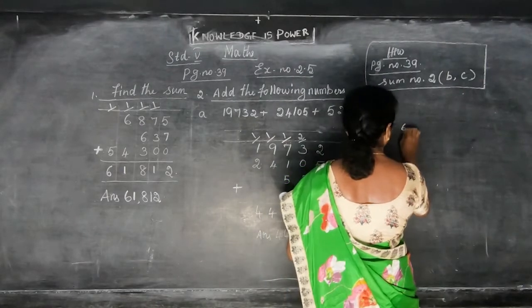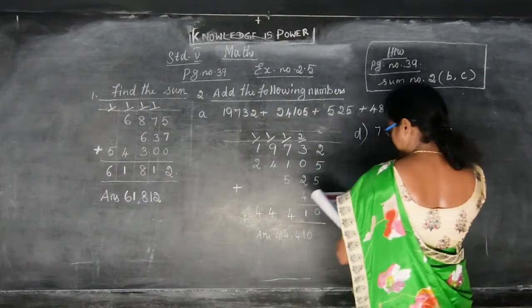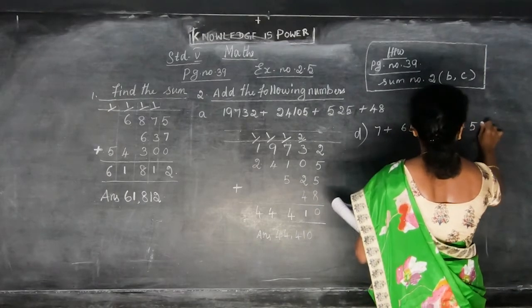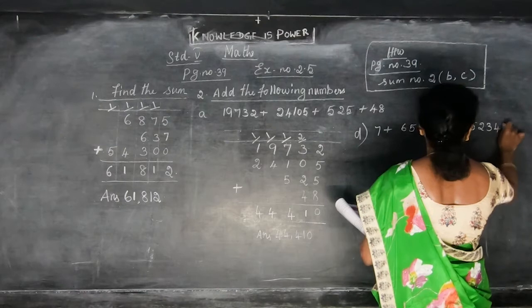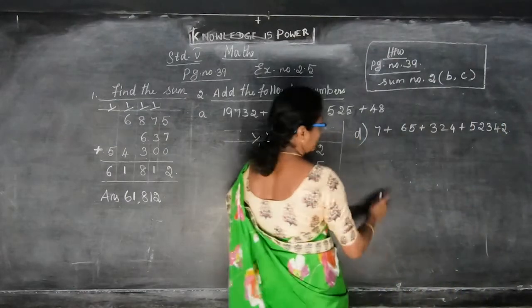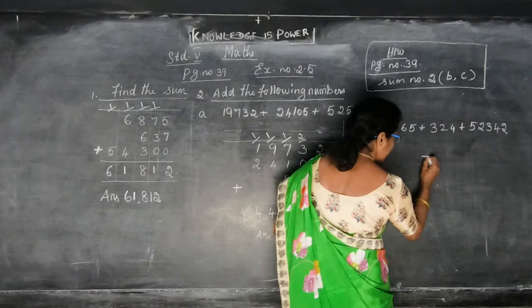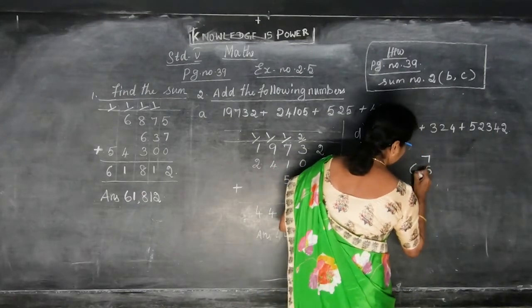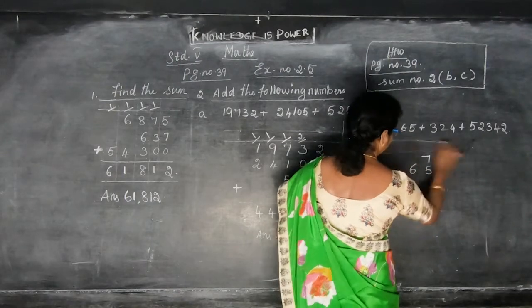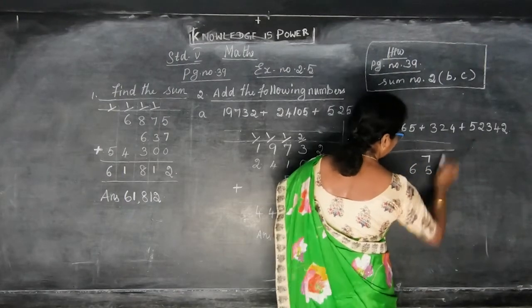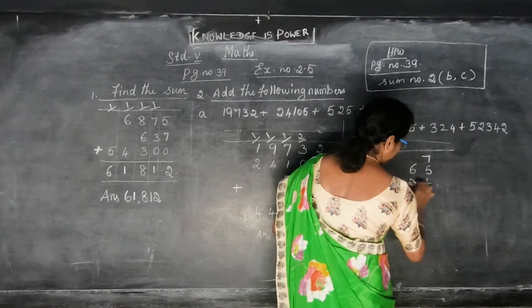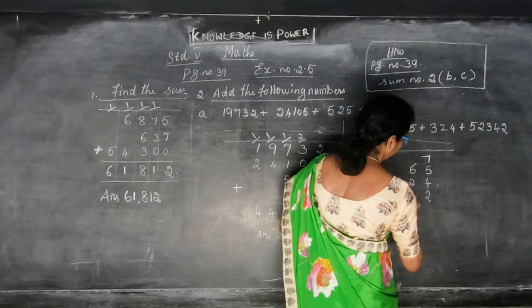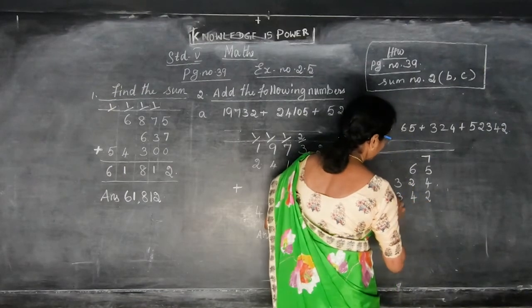They are given: 7 plus 65 plus 324 plus 52,342. Now put the number 7 there — it is a 1-digit number. So you put 7. Then the 2-digit number 65: 5 and 6. Then 324: 4, 2 and 3. And next is 52,342: 2, 4, 3, 2 and 5.